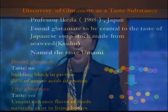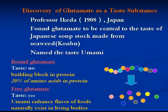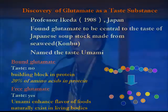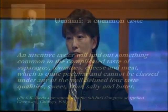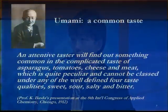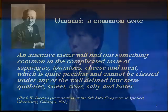Who discovered the taste of glutamate? It was almost 100 years ago — Professor Kikunae Ikeda found umami. In 1899, Professor Ikeda went to Germany to study physics. Even though his major was not taste science, he was very much interested in the taste of foods he first encountered in Germany — for example, tomato, cheese, meat, and asparagus.